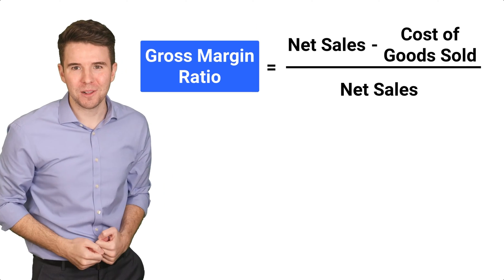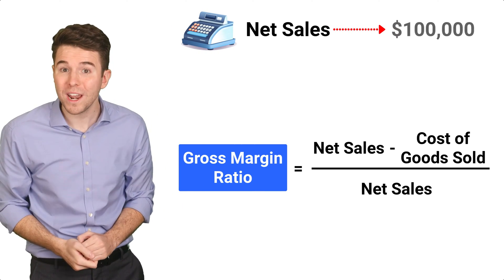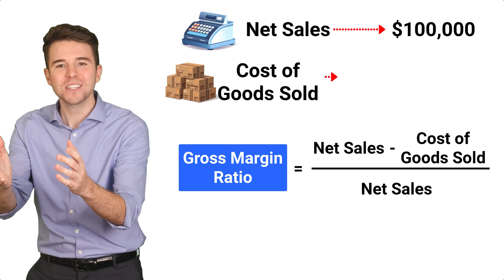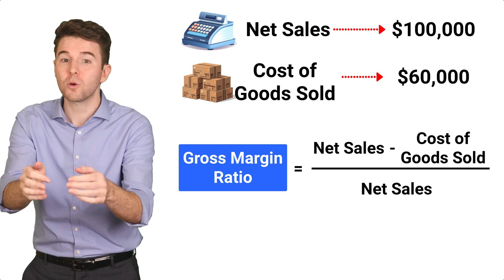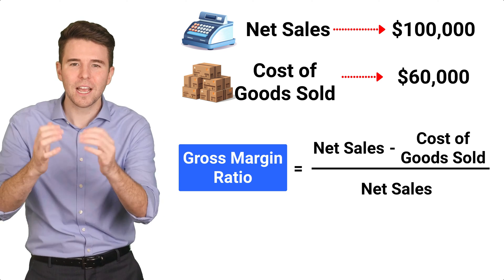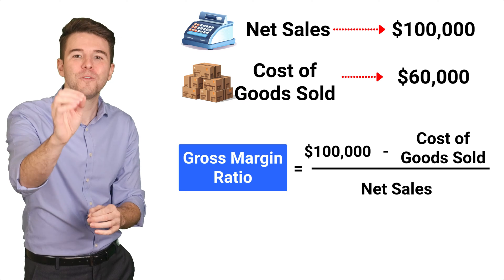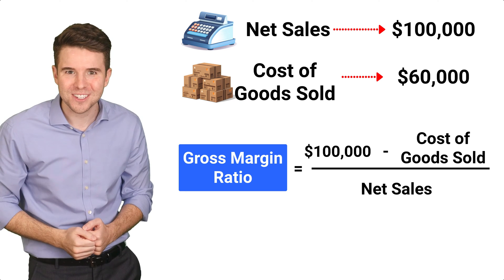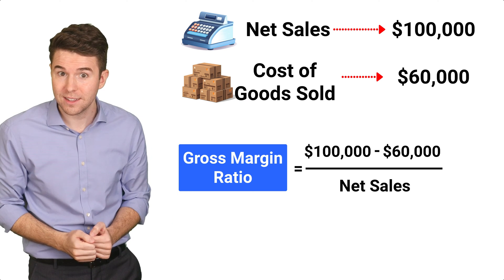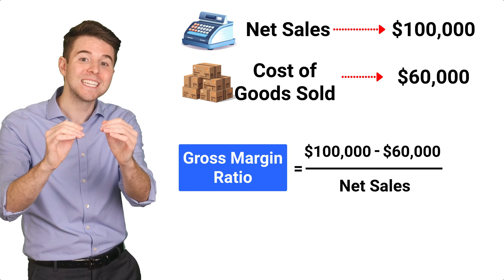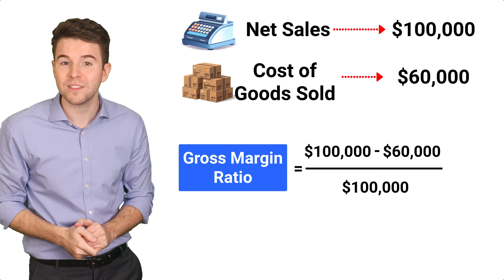Let's break this down with an example. Say a company had net sales of 100,000 and cost of goods sold of 60,000 for this year. To calculate the gross margin ratio, we take net sales of 100,000 and subtract cost of goods sold of 60,000 and then divide that by net sales of 100,000.